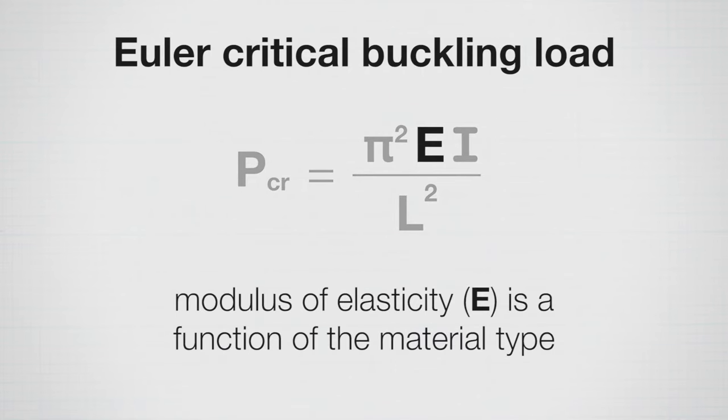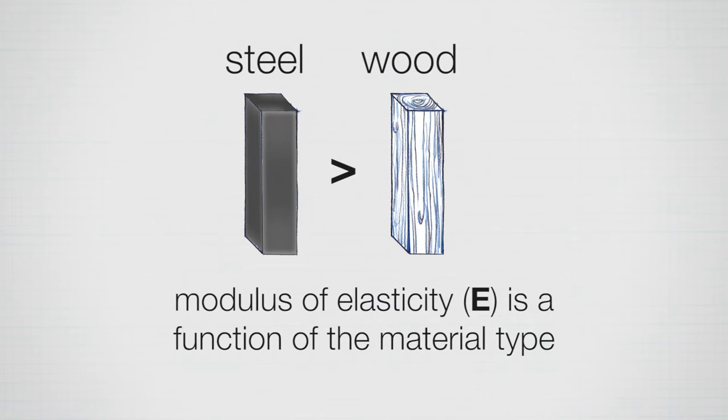E is a material property. So different materials will have different modulus of elasticity values, which is what E stands for. So the modulus of elasticity, or E for steel, will be much higher than the modulus of elasticity for wood, as an example.